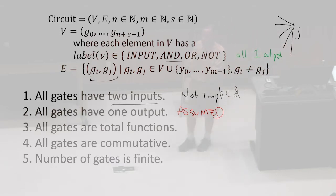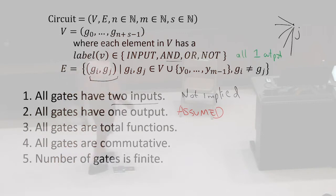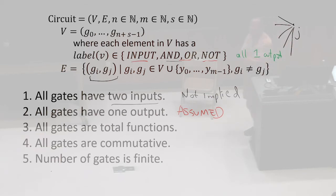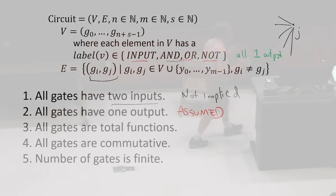What about all gates being total functions — do you think we're assuming this? First, are gates functions? The gates, if we think about AND, OR, and NOT, are functions. But does our representation assume that? Until we define how it executes, we don't know what they are — or at least it doesn't matter what they are. So we're certainly not assuming anything about them at the representation level.